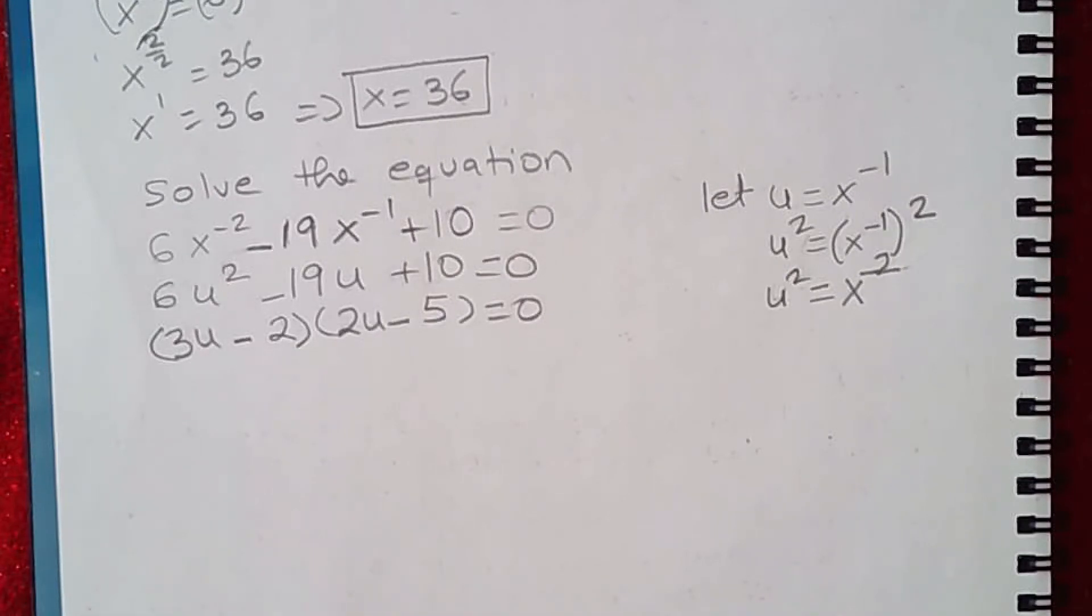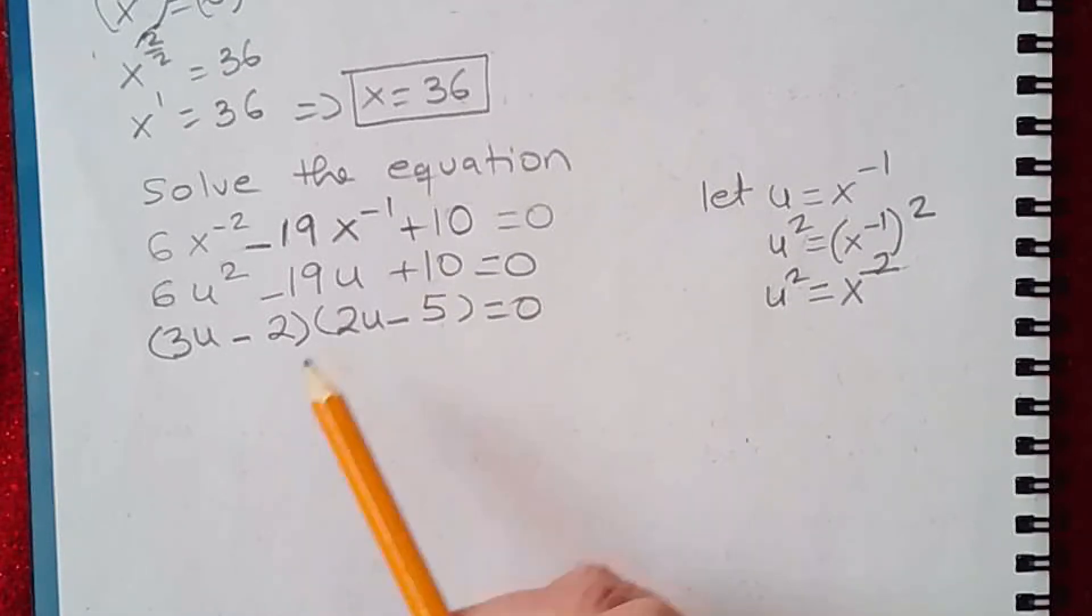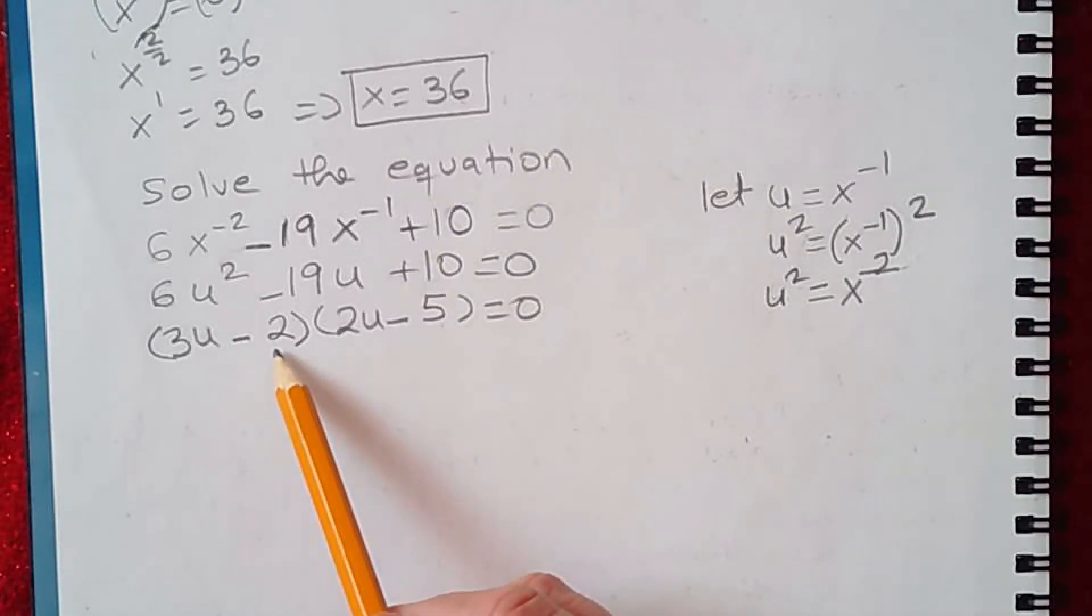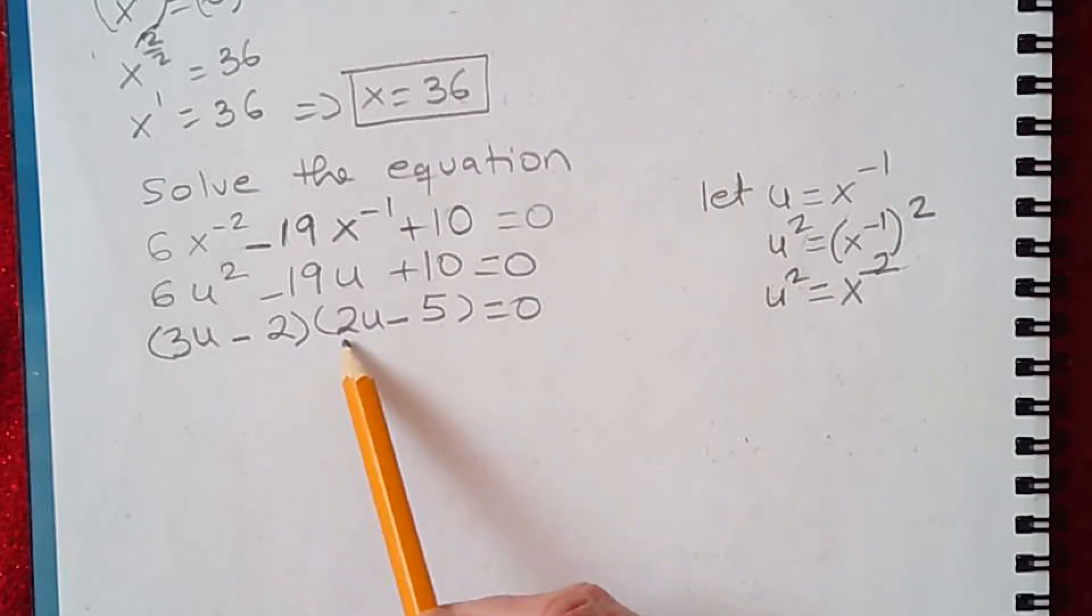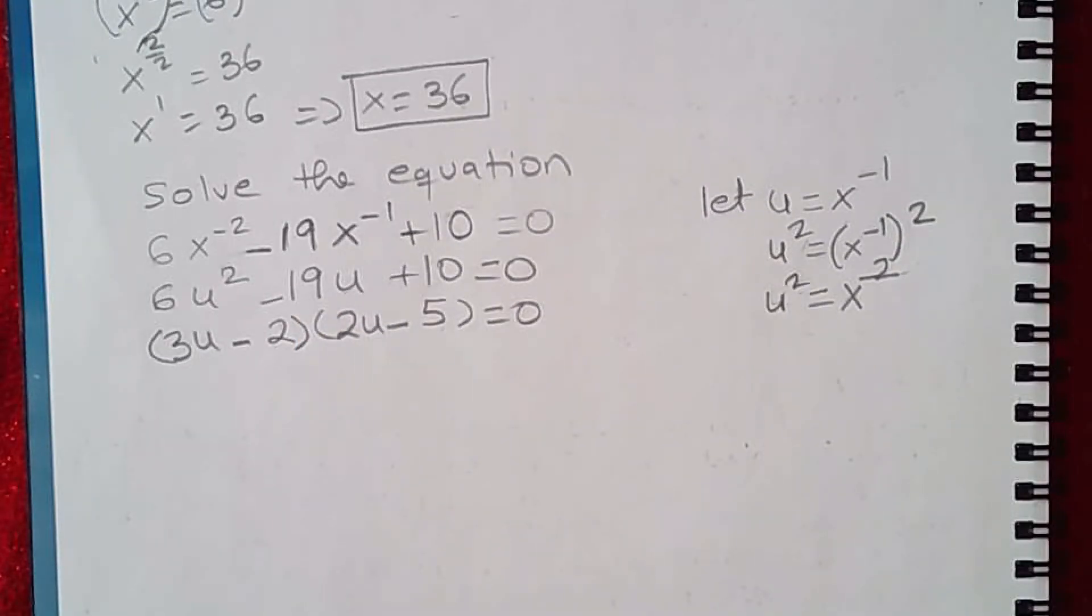You can check, you can do FOIL and see if you can get the original quadratic equation. You can see negative 2 times negative 5 is positive 10, and you can check the middle terms. Negative 4u minus 15u will give me negative 19u. So this is the correct factorization.